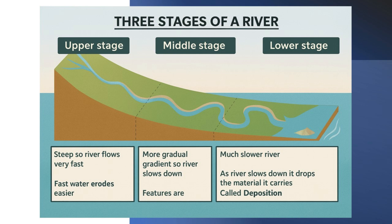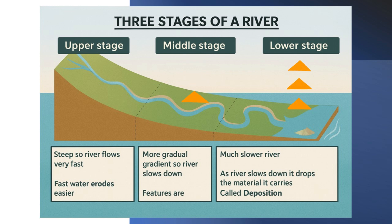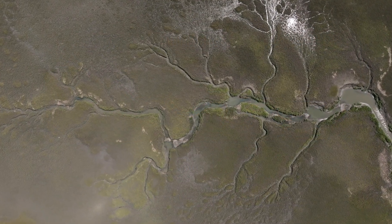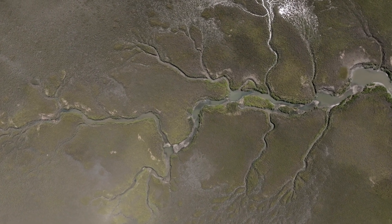Coming up next on Magfar Online: the middle and lower courses of a river. Watch as the river slows down and twists into meanders, cuts off oxbow lakes, spills into wide floodplains, and builds massive deltas at its mouth. You'll witness the river's transformation from a force of destruction to a creator of fertile land, where people settle, farm, and build entire civilizations.